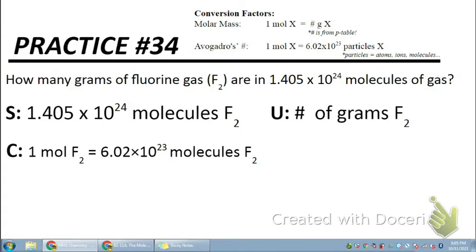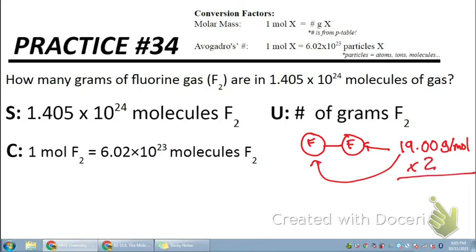So think about F2. F2 is going to look like this. There are two atoms of fluorine bound together. We know that the mass of one fluorine is 19.00 grams per mole. But because there are two fluorines, we want to multiply that value by two. So the total molar mass of F2 is 38.00 grams per mole. I'm going to be using this number in our conversion factor up at the top.